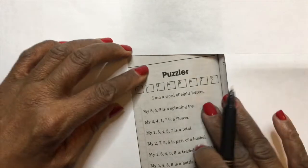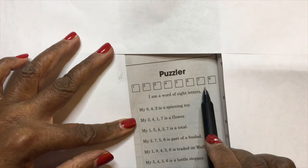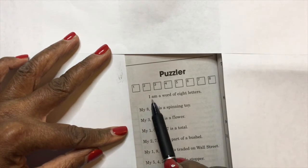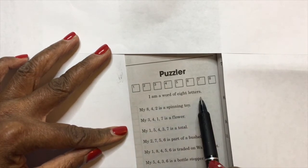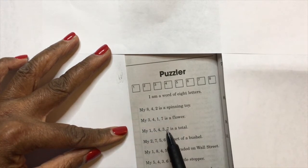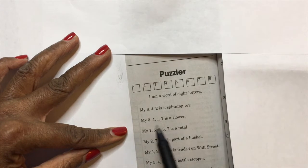Okay, so the way this puzzle works is we have eight boxes. They're numbered one through eight, and we have eight clues. It says 'I am a word of eight letters.' So when I read the clues, the number is going to correspond with one of the letters. So my first clue